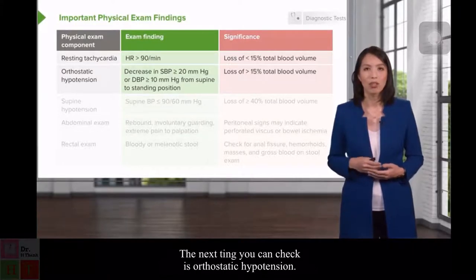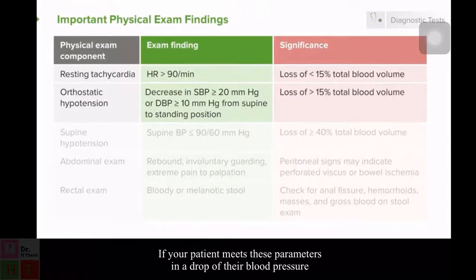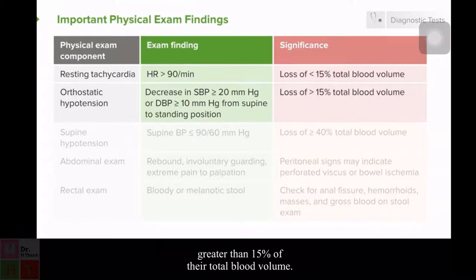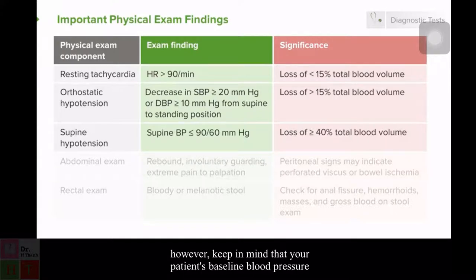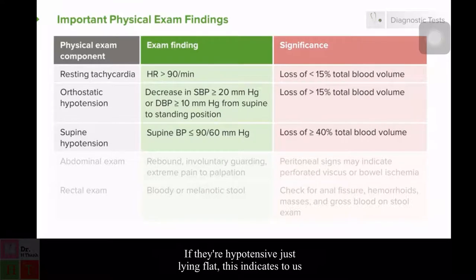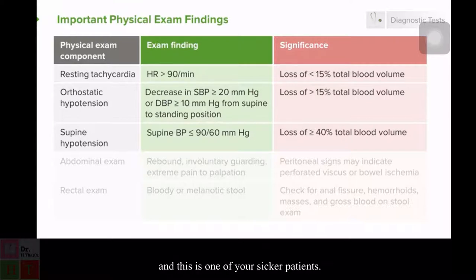Next, check for orthostatic hypotension. If the patient meets the parameters for a drop in blood pressure from supine to standing, this indicates they have already lost greater than 15% of their total blood volume — this is already a concerning finding. If your patient is already hypotensive while lying flat — generally a blood pressure less than 90 over 60, though always compare to their baseline — this indicates they have lost greater than 40% of their total blood volume, and this is one of your sicker patients.